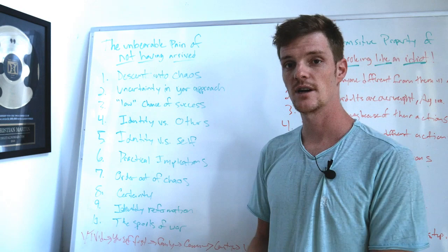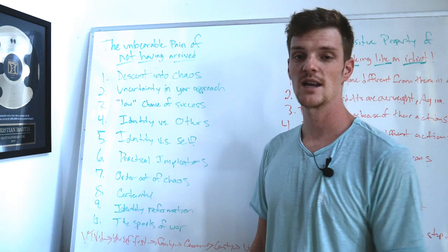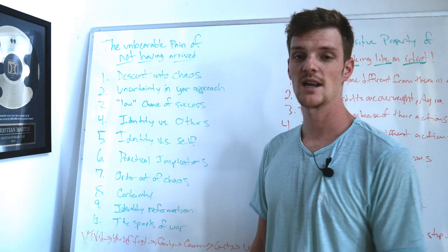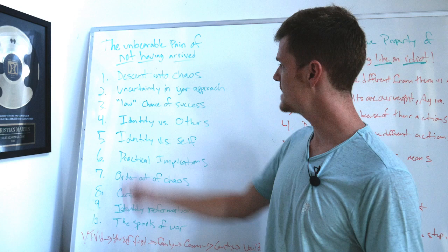Number one is descent into chaos. So if we go after a hard, abstract, non-mainstream goal, anything, whether it's writing a book or becoming an entrepreneur or fulfilling a dream, you're going to descend into chaos, right?